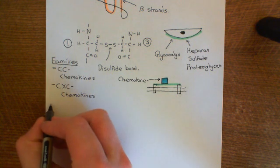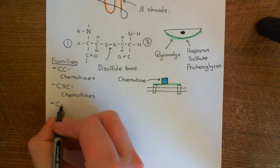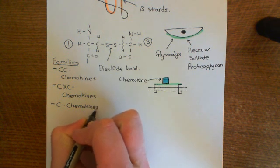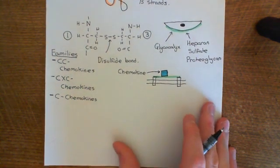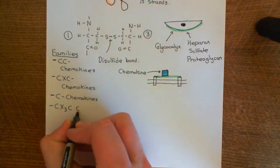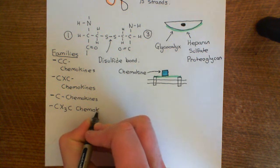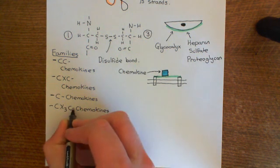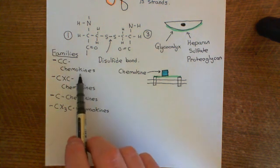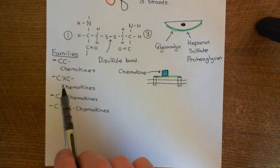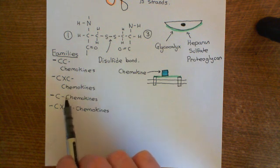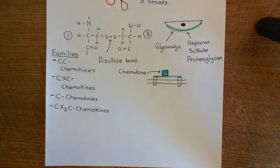The next type is this type that only has two cysteines, which is the C chemokines, also occasionally known as the XC chemokines. And then finally, the CX3C chemokines. Now, these C chemokines and these CX3C chemokines, those are rare. If you're going to remember two of the families, remember the CC chemokines and the CXC chemokines. These have absolutely loads of members which are very important in the immune response. These two are a little bit more niche.